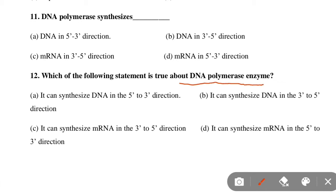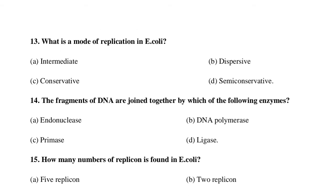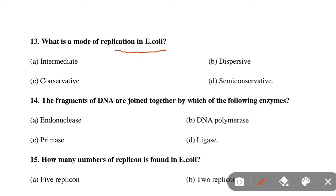Next MCQ: Which of the following statements is true about DNA polymerase? Option A: It can synthesize DNA in the 5' to 3' direction, Option B: It can synthesize DNA in the 3' to 5' direction, Option C: It can synthesize mRNA in the 3' to 5' direction, Option D: It can synthesize mRNA in the 5' to 3' direction. Option A is correct — it can synthesize DNA in the 5' to 3' direction.